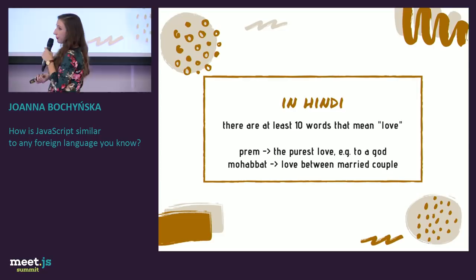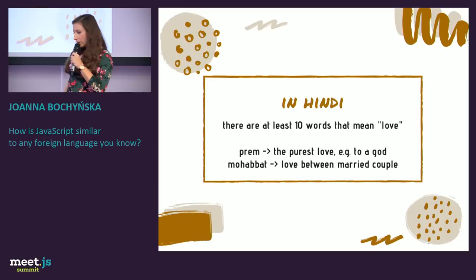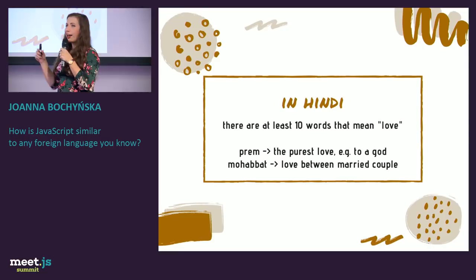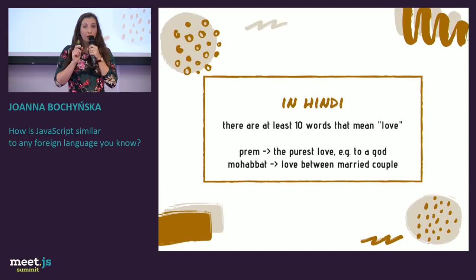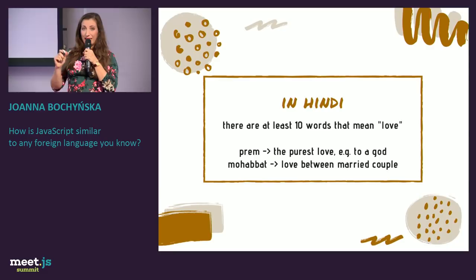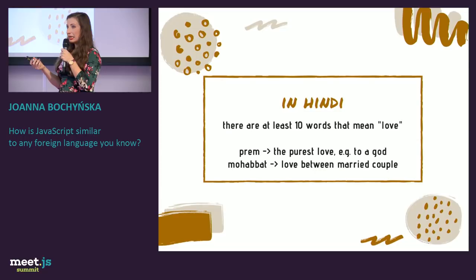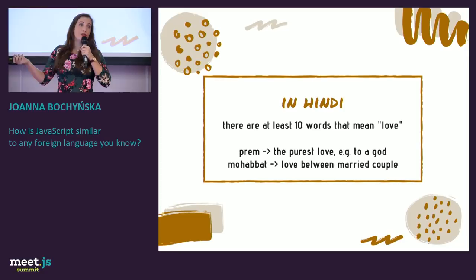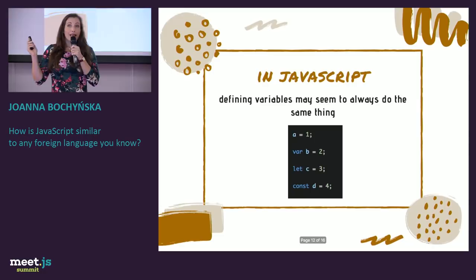'Mohabbat' comes from Urdu and also means 'love' in the dictionary. However, you use it between lovers — a married couple — and in Bollywood songs. You would never use it to describe love between a father and a child; it's just not appropriate. If you don't know this, you may do some wrong things. So these two words at first sight both seem to mean 'love,' but actually they are not the same.